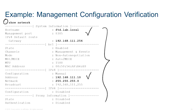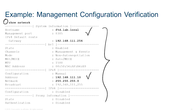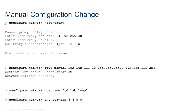With the appliance initially set up, if you realize you made a mistake and need to change some or all of those attributes, you do it at the command line using the 'configure network' set of commands. For example, 'configure network http proxy' lets you define an address and port for a proxy with optional authentication, and 'configure network ipv4 manual' lets you set your IP address.